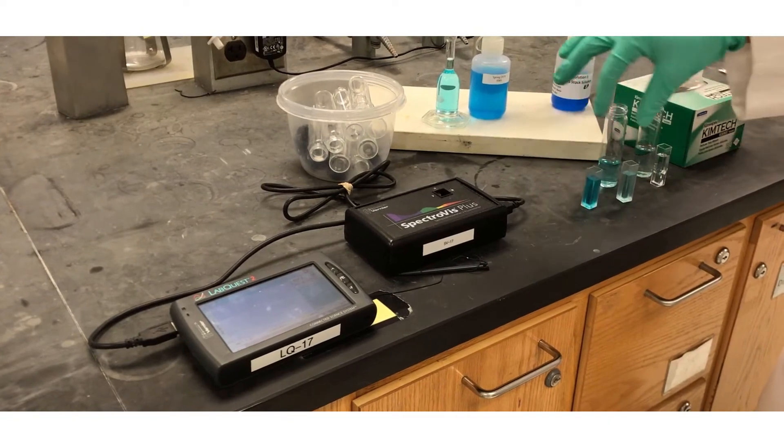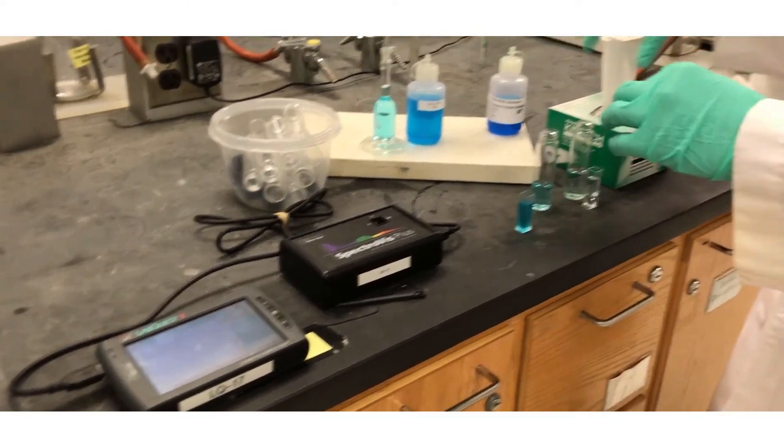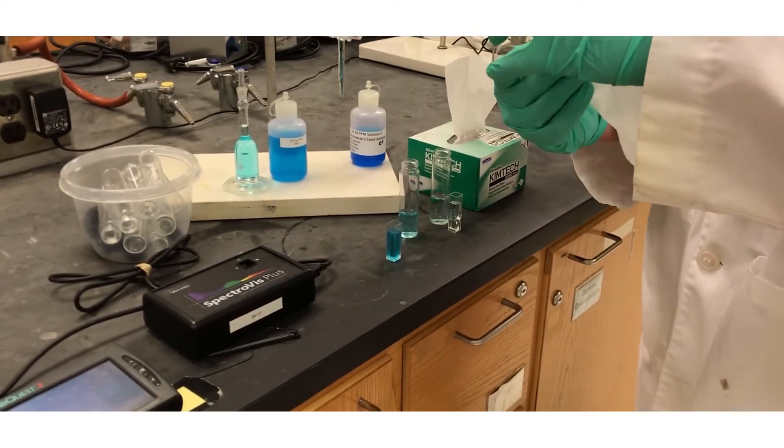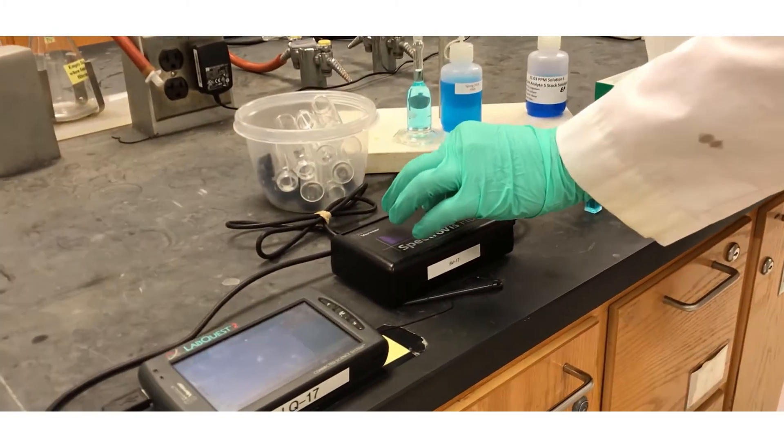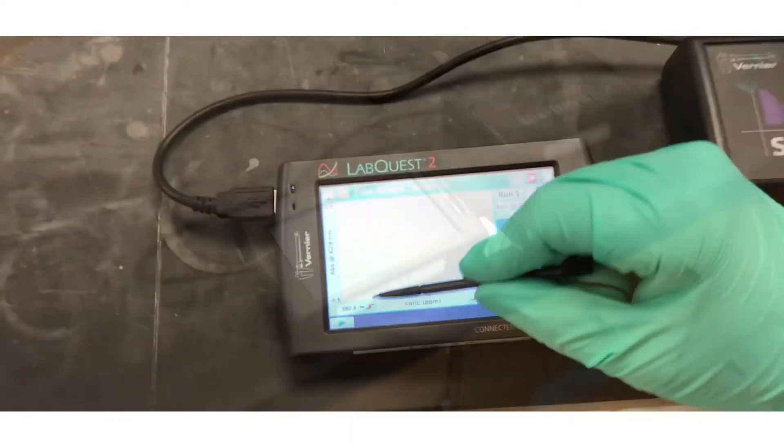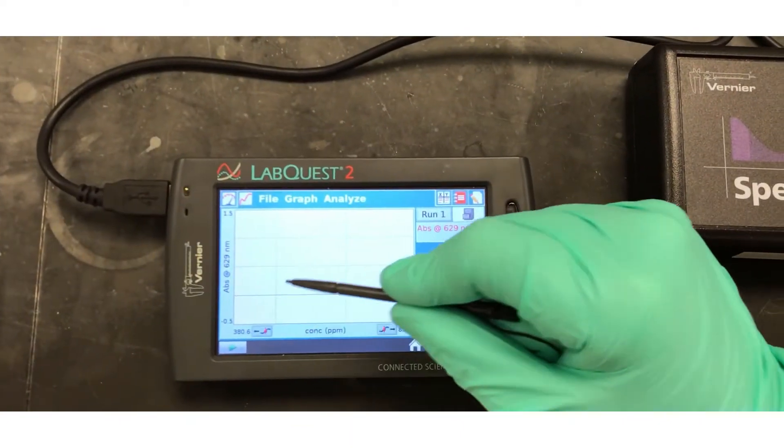Let's check the absorbance of a much more dilute sample. Always wipe the sides of the cuvette with a kimwipe to remove fingerprints and other interferences. Push the green arrow, then the red square to obtain a reading.